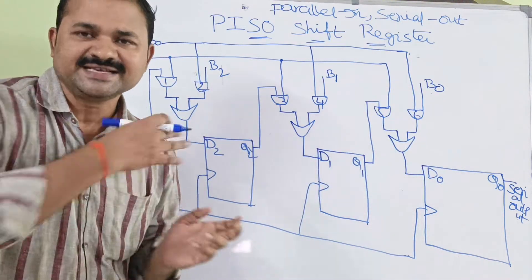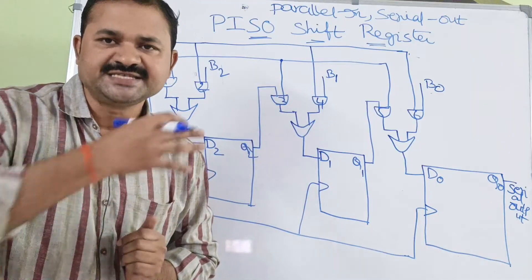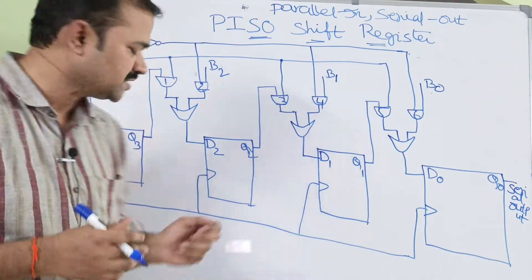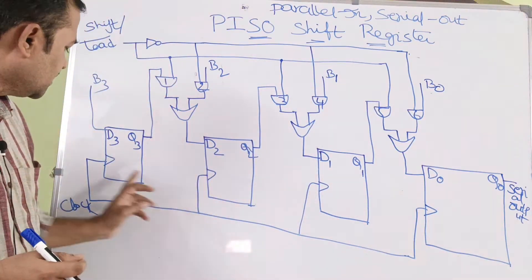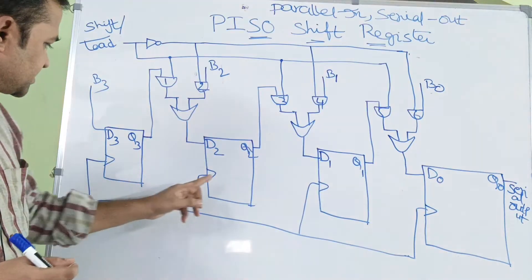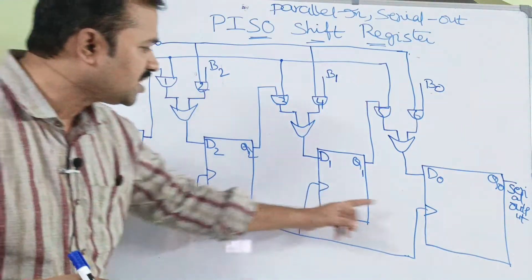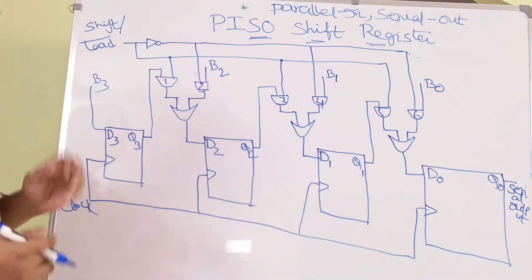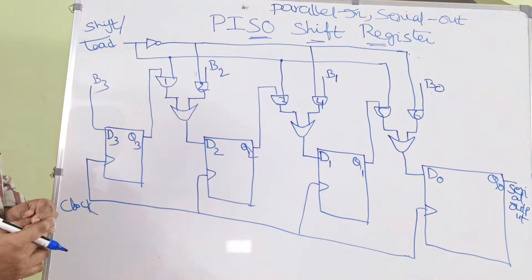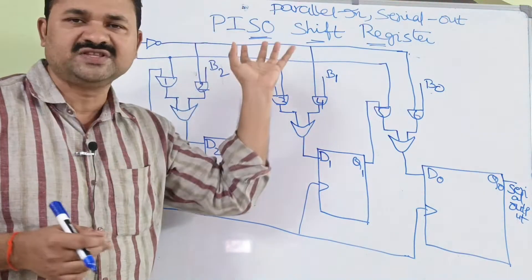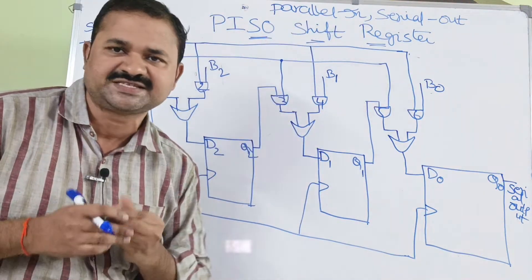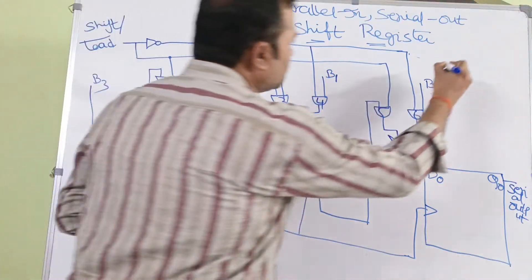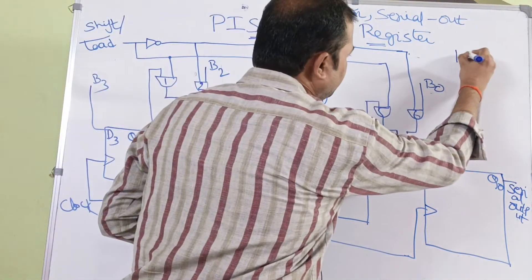This is a sequential circuit, so we must apply clock pulse on all 4 flip-flops. Next, let us see with the help of an example. Let the inputs be 1010.